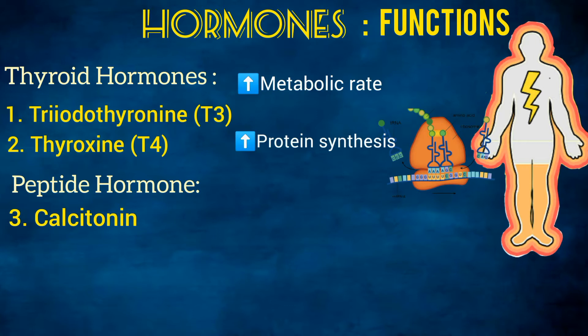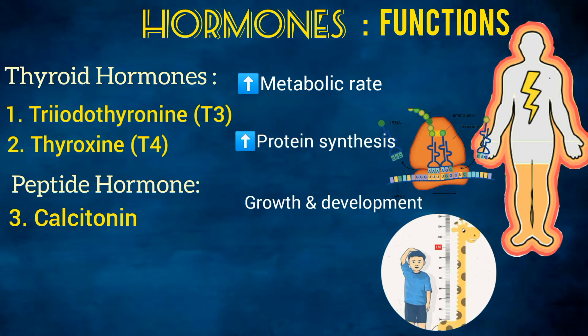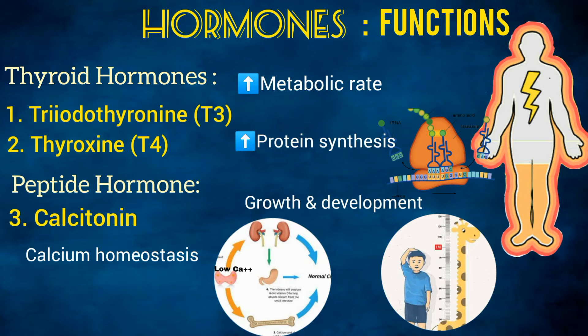The thyroid hormones increase the body's metabolic rate, influence protein synthesis, and are also responsible for growth and development in children. Calcitonin plays a role in calcium homeostasis.